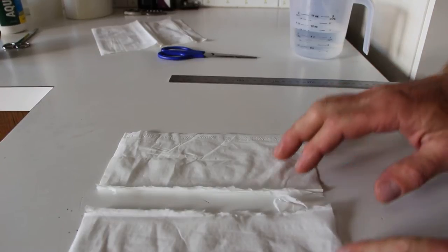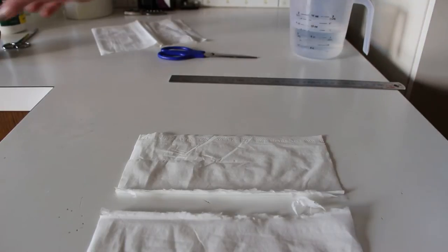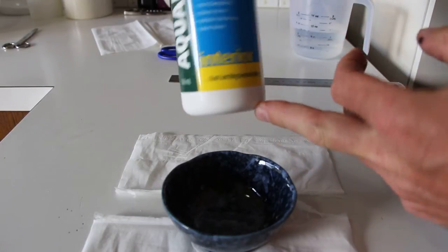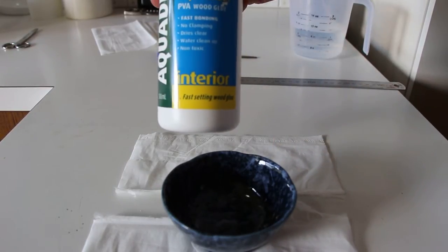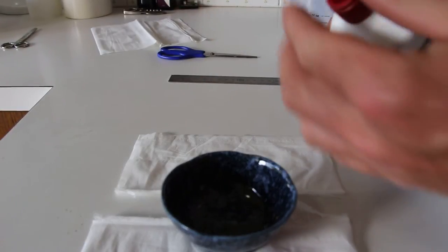The next thing to do is do a glue mix which is essentially just in a bowl PVA glue. In this case I've got Kwikset, makes no difference what you use. It's polyvinyl acetate, the glue, or common wood glue.